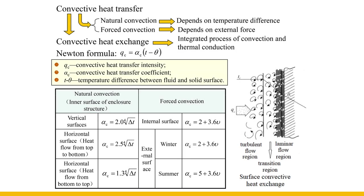Convection exists in flows, including natural convection and forced convection. Natural convection is formed due to temperature difference, while forced convection is formed by external force. The degree of natural convection mainly depends on the temperature difference — the greater the temperature difference, the stronger the convection. Forced convection depends on the magnitude of the external force; the greater the external force, the stronger the convection.